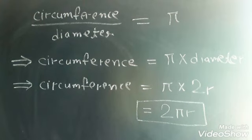Here, r is the radius of the circle. We replace d by 2r because we know that diameter is double the radius. So, finally we get the formula that circumference of a circle is equal to 2πr.